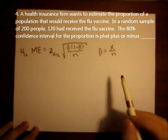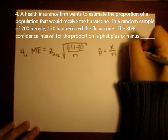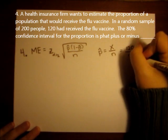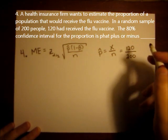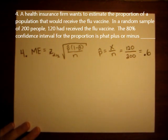In this example, x is the number of successes, which is 120, and n is the number of trials, or 200. So if we divide 120 by 200, in this question, we're using a p hat of 0.6.